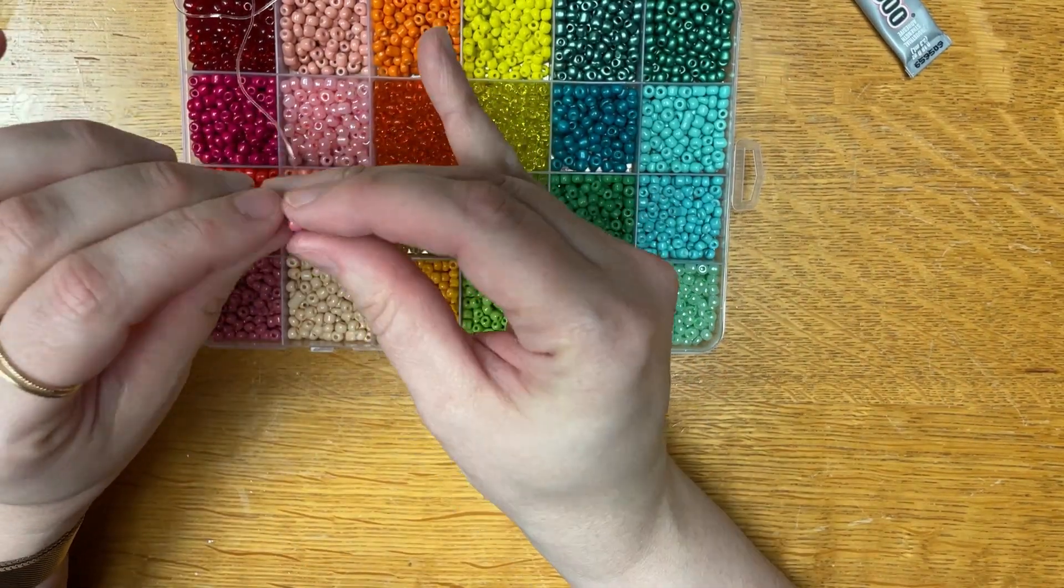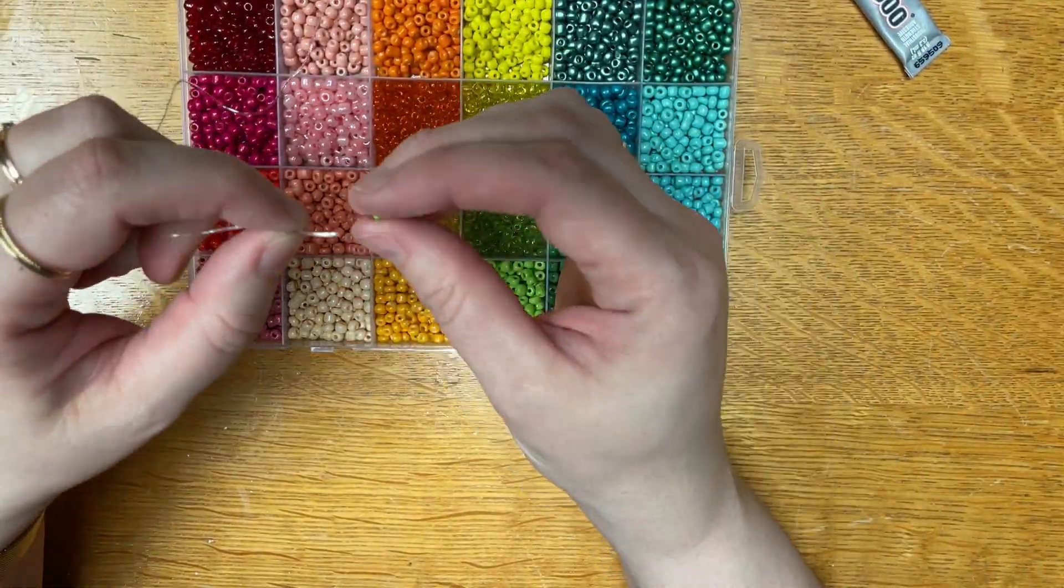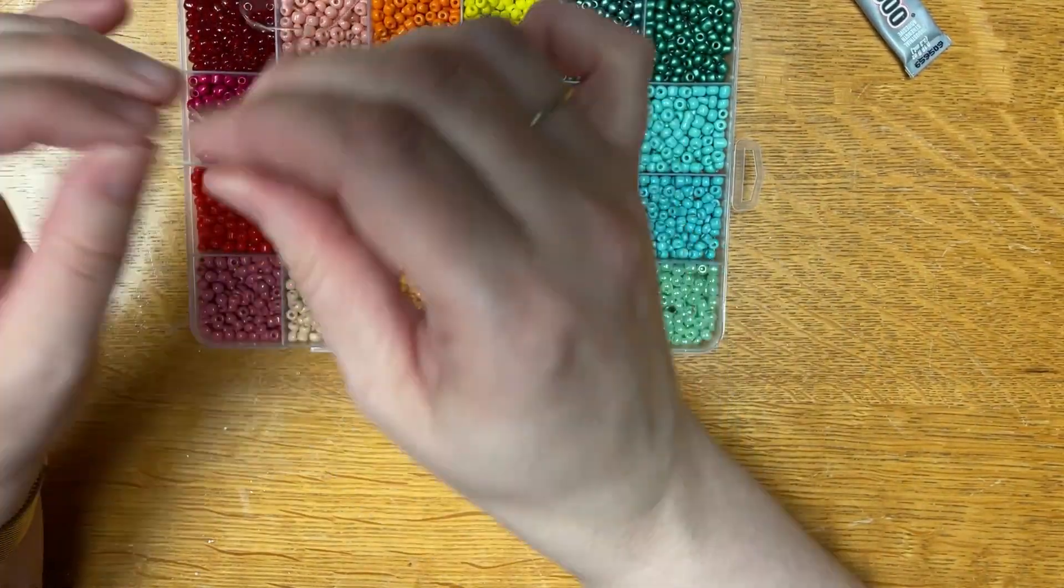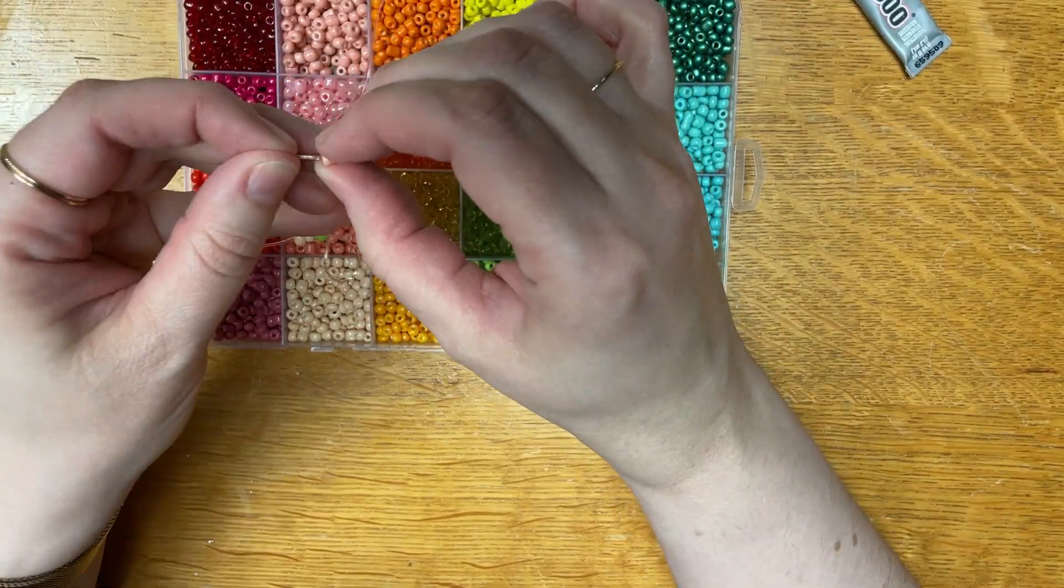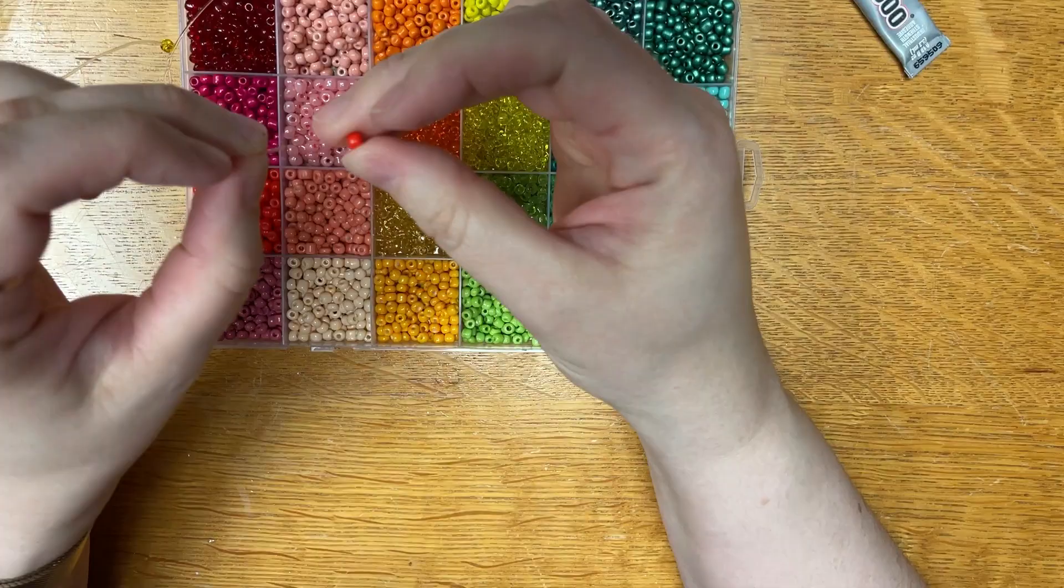You can use a needle to go back through beads to make it look like daisies. You can actually do macrame as you do it if you're using a cord and not stretchy stuff like me. Either way, you're gonna thread all your beads on.